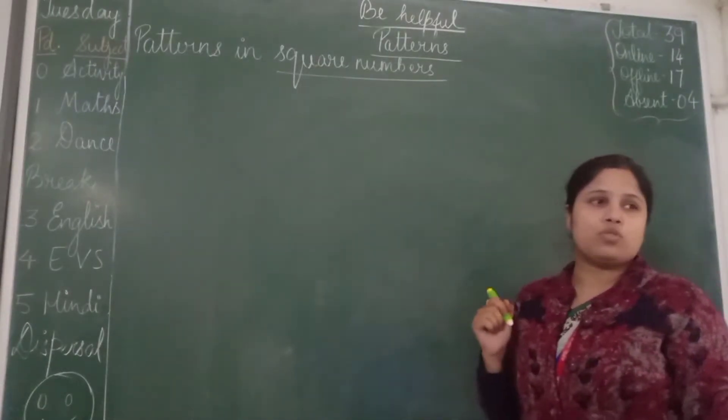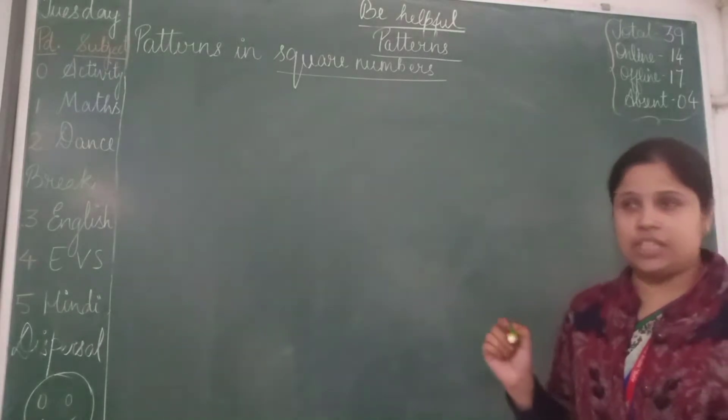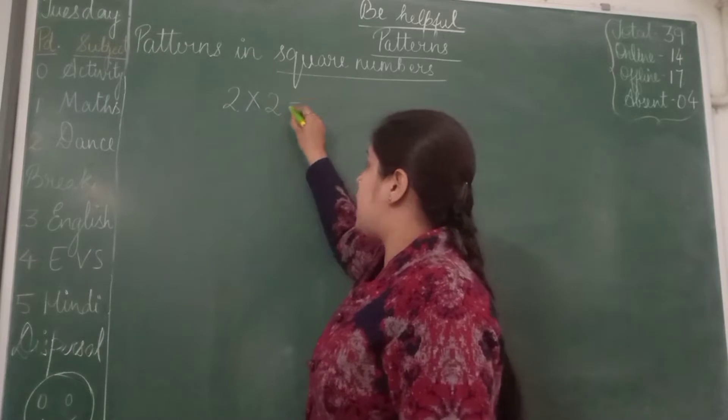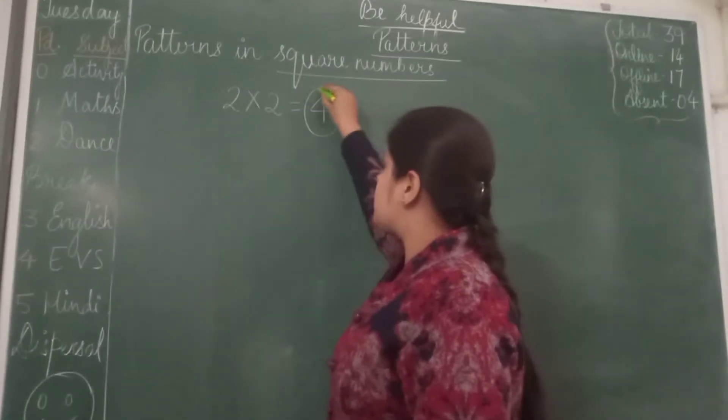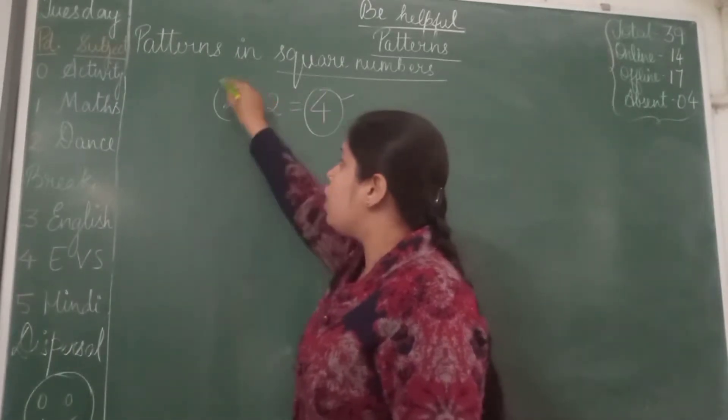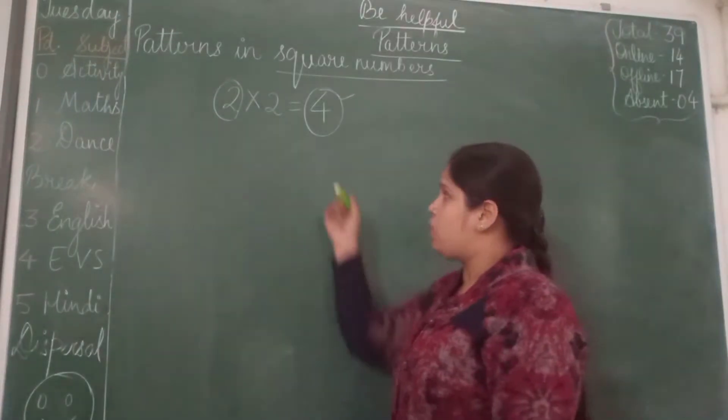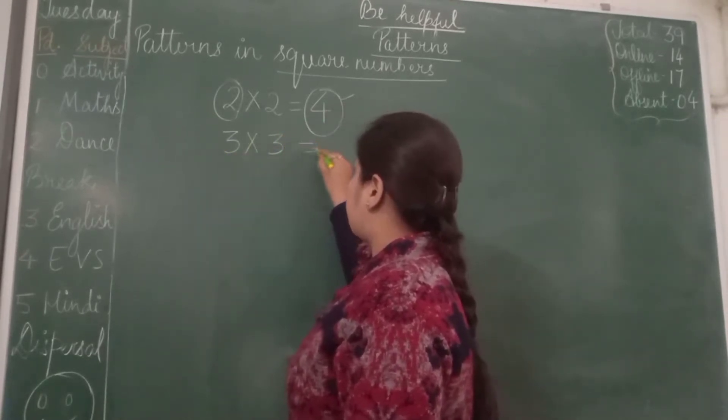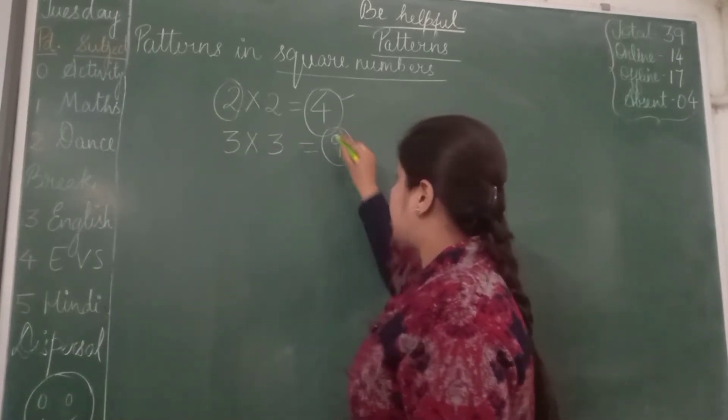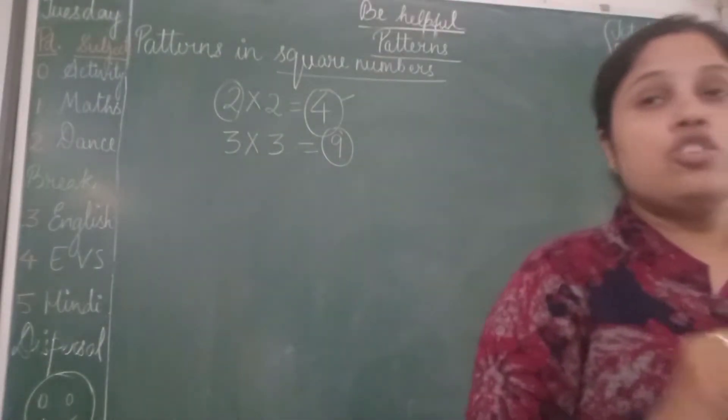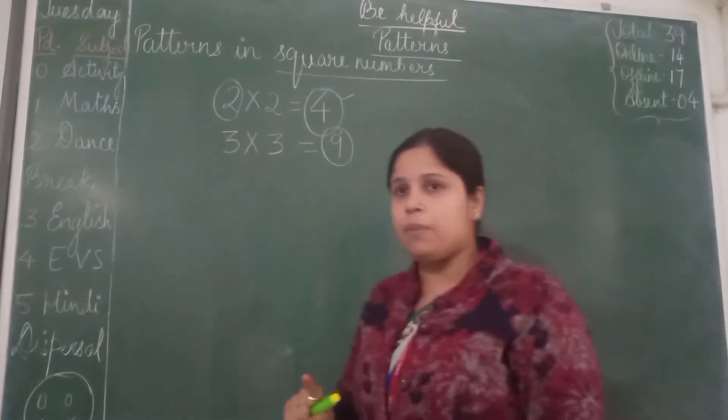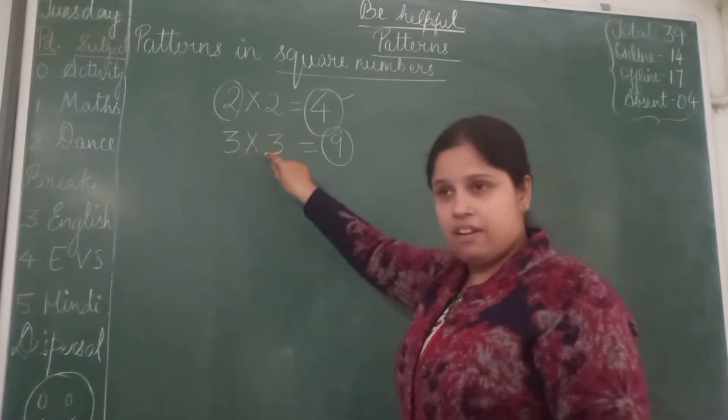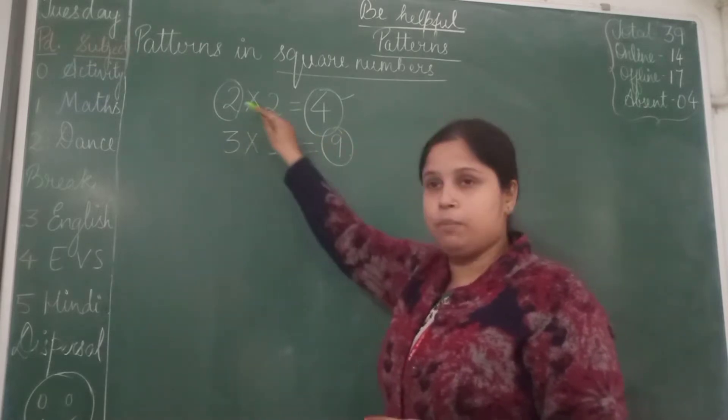So if we talk about square numbers, we see that when a number is multiplied by itself, we get the square of that number. For example, we need to find out the square of 3. What we are going to do? We are going to multiply 3 by 3 and we will be getting the square of 3. So to find out the square numbers, we need to multiply the number by itself.